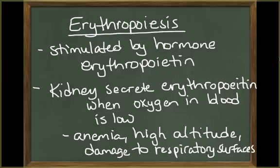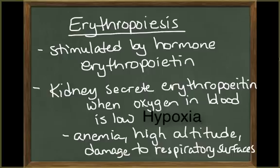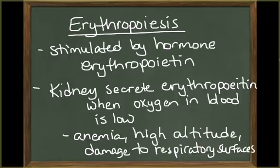Erythropoiesis is stimulated directly by the hormone erythropoietin, which is produced in the kidney when oxygen concentrations are low. A low oxygen level in tissues is called hypoxia. Low oxygen can be caused from anemia, when low blood flow to the kidneys declines, when oxygen content of air in the lungs declines such as at high altitude, and when the respiratory surfaces of the lungs are damaged.